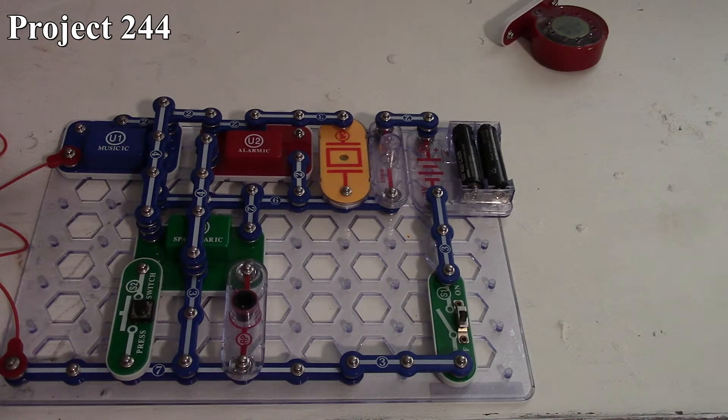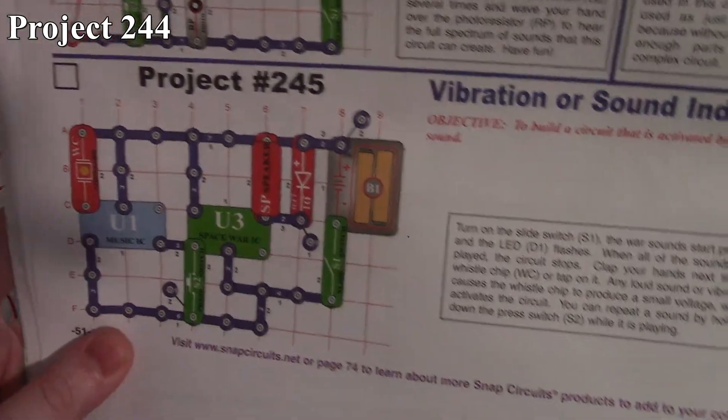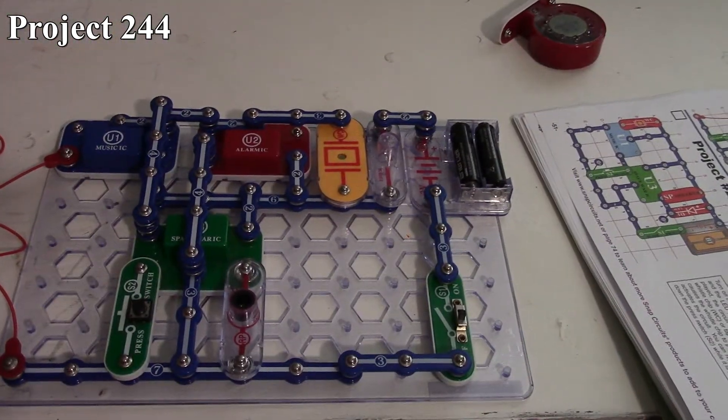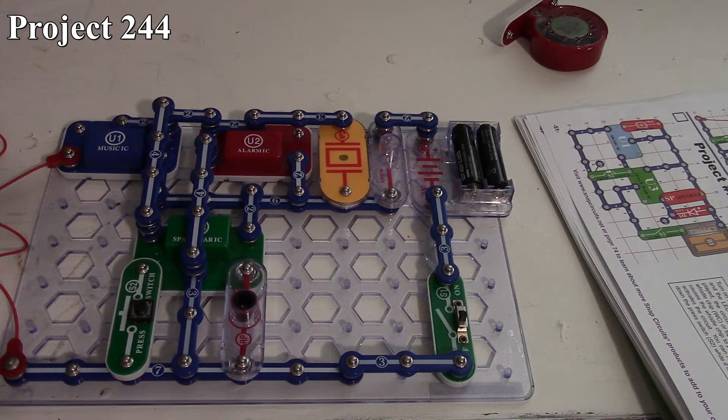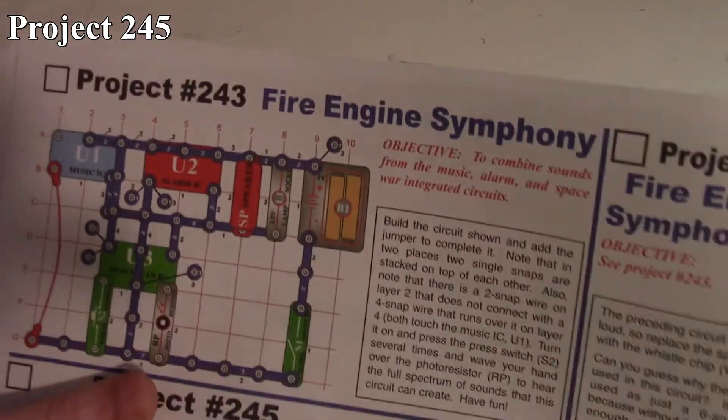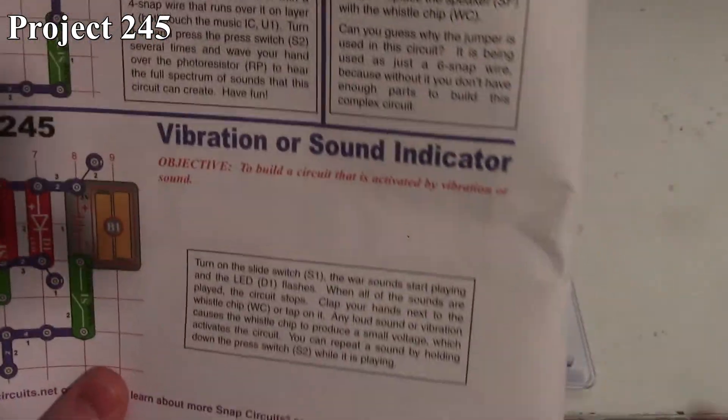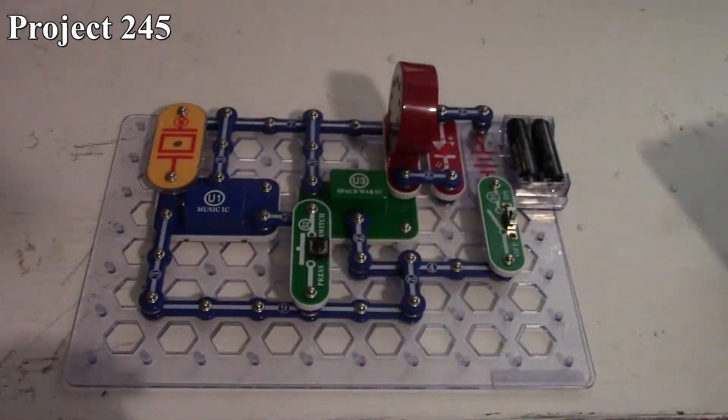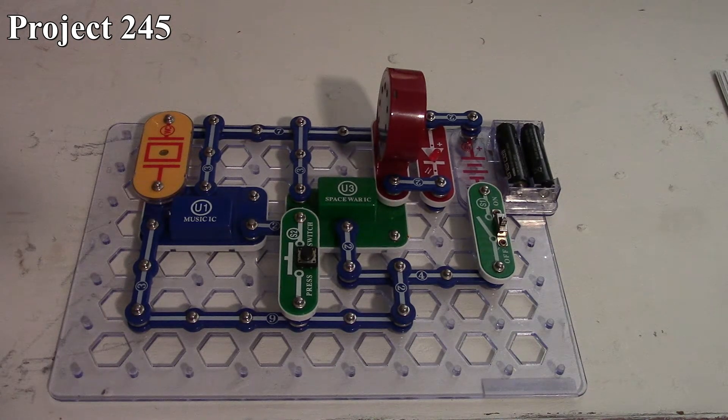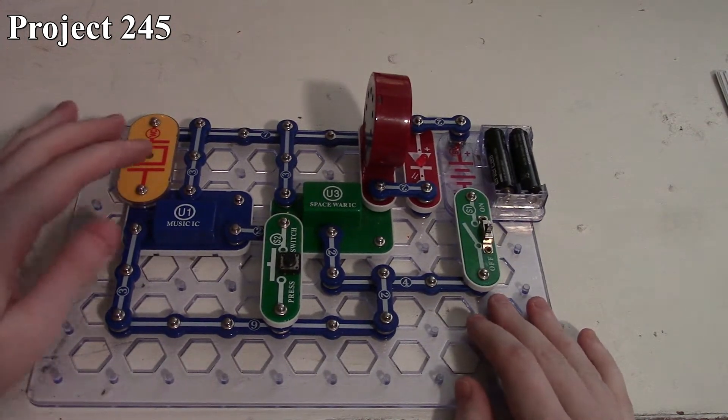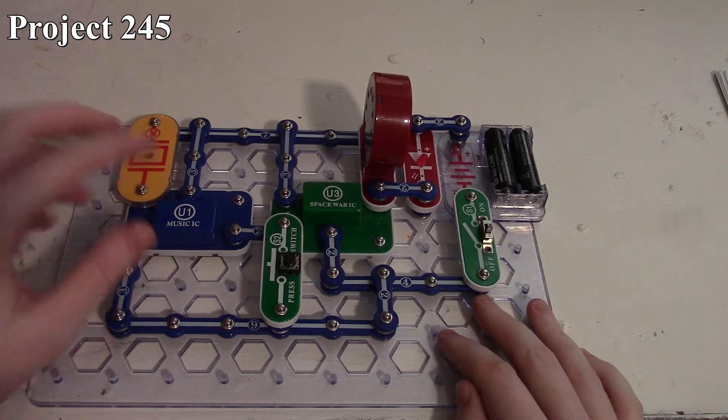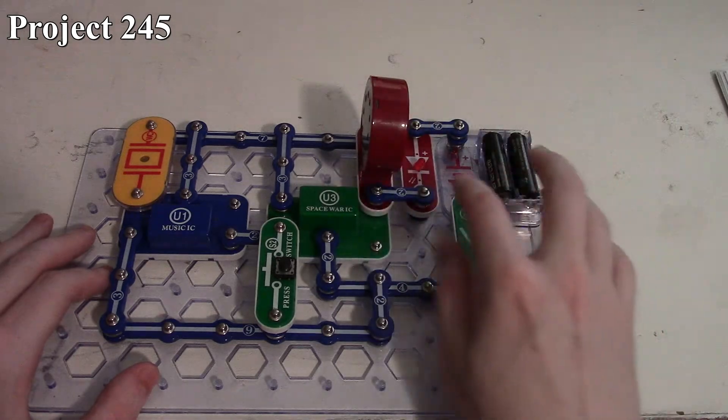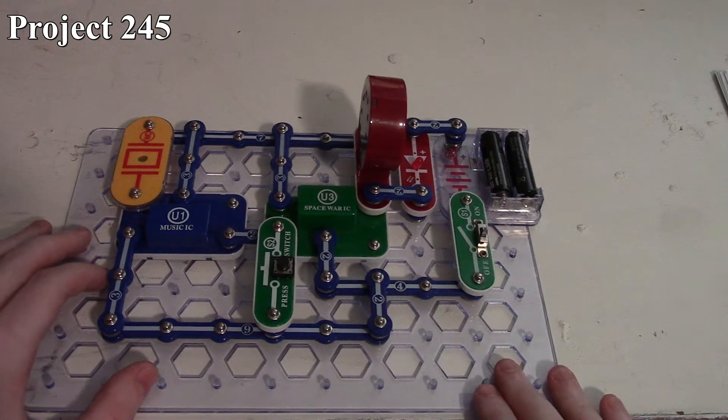That's project 244, and the last project is 245, the vibration or sound indicator. There it is in the book, and there it is on the board. Here we're using our whistle chip to activate our music IC, and our music IC is then feeding our space war IC, which goes out to our speaker and our red LED there. If we want to have a sound repeating, we've got our press switch here we can do that with.